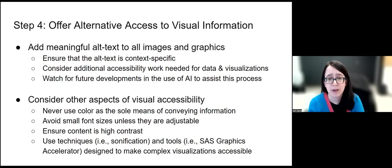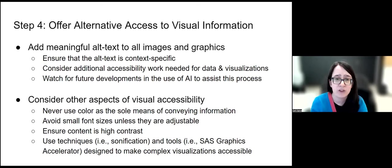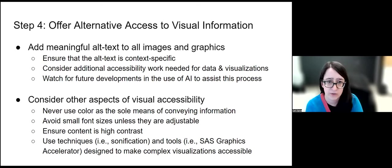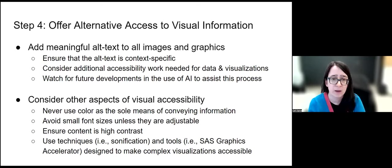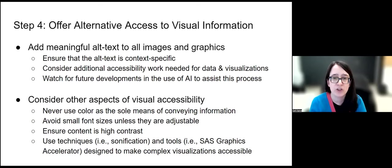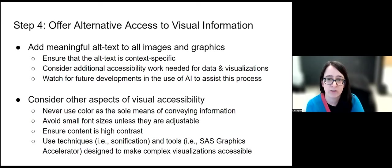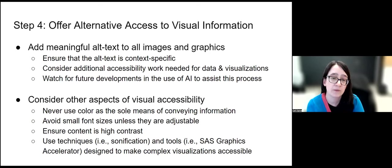The same picture might need different alt text depending on context — if you're talking about a painting, the alt text for a fashion history class versus a fine arts class might be very different. You need to make alt text that's meaningful, which often means working with the person who created the document. Also consider additional accessibility work needed for data and visualizations: for complex visualizations, offer a way of navigating for someone who isn't able to access it with a screen reader — a full description of what the data says, or access to the raw data in another file format.